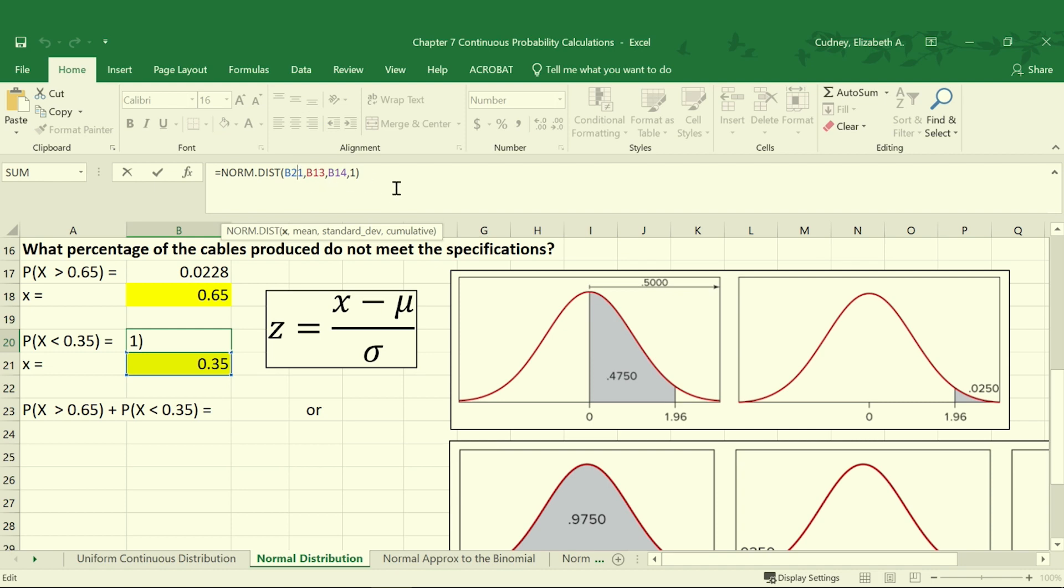We're going to use the value in B21, which is what we're solving for. That was our value of 0.35. Our mean was given to us again in cell B13. Our standard deviation again is in cell B14. And we're using a 1 again, because it's cumulative. We're calculating anything to the left of that point. We want cumulative, not just exactly equal to 0.35, which is why we use the 1.